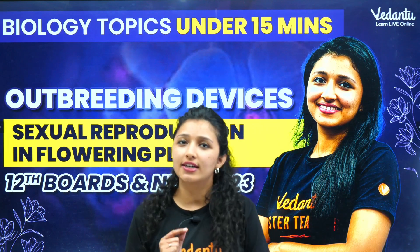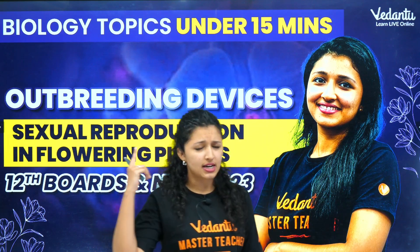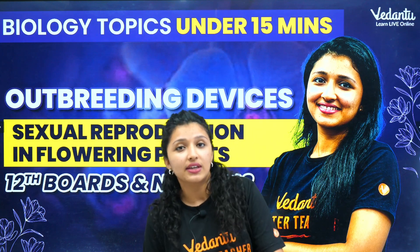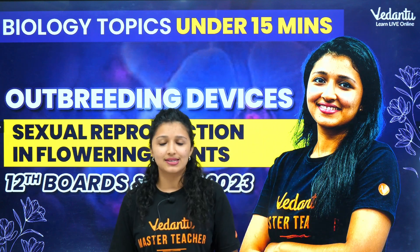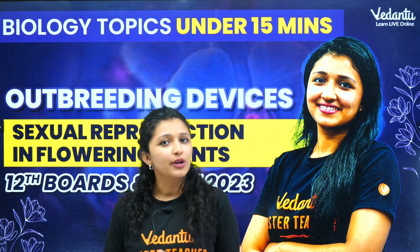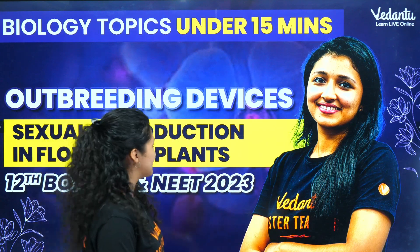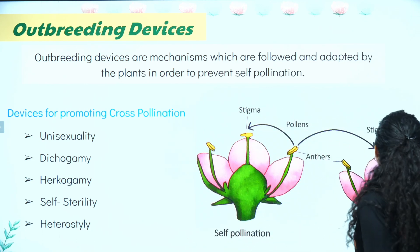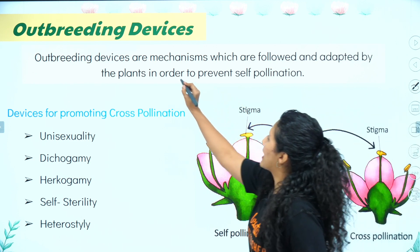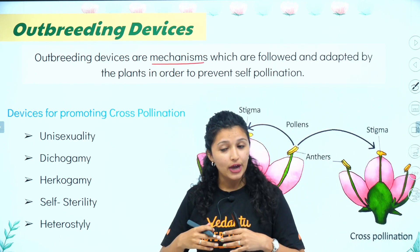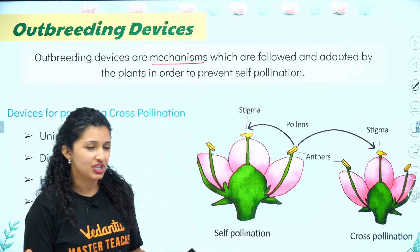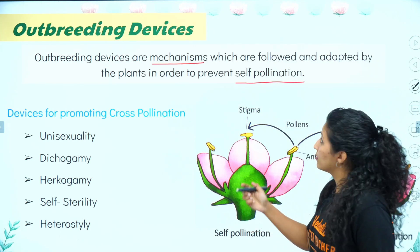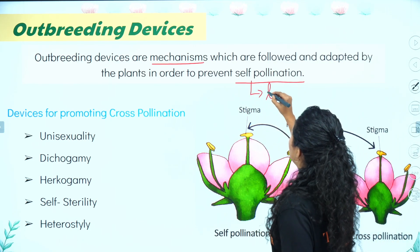Welcome everyone. Today's topic in 15 minutes is outbreeding devices. These are mechanisms from the plant which are followed and adapted to prevent self-pollination, and the self-pollination leads to inbreeding depression.